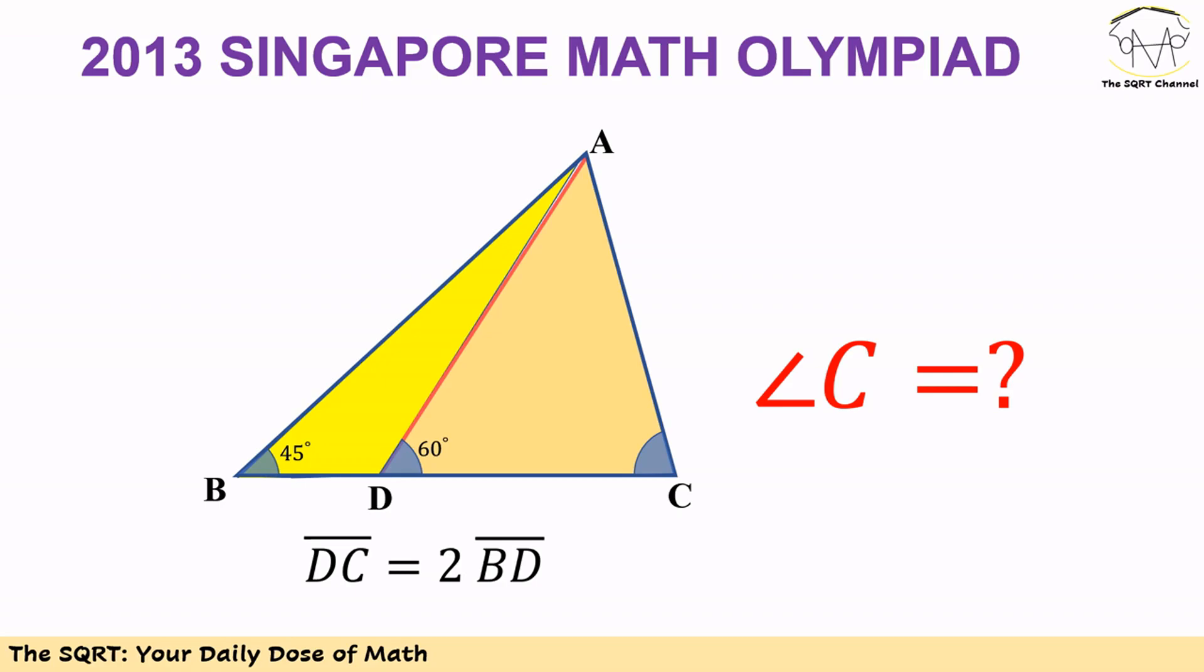Hello everyone, in this video we are going to talk about another problem from the 2013 Singapore Math Olympiad. In this problem we have a triangle ABC and we know DC is 2 times BD. We also know that angle D is 60 degrees and angle B is 45 degrees. We want to find angle C.